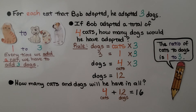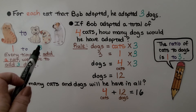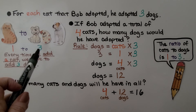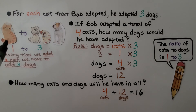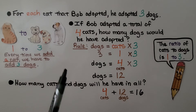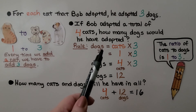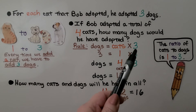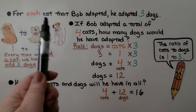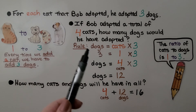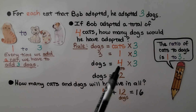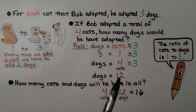For each cat that Bob adopted, he adopted three dogs. If Bob adopted a total of four cats, how many dogs would he have adopted? Our rule is: the number of dogs equals cats times three. We have one cat, three dogs. If we have four cats, we do four times three — the number of dogs is 12.